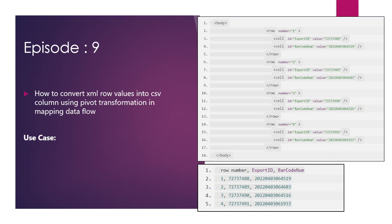Let's see what our requirement is. We are going to practically see how to convert XML row values into CSV columns using pivot transformation in Mapping Dataflow. Let's understand the use case with the help of this image. This is how the source data looks like, where the data is in XML format.